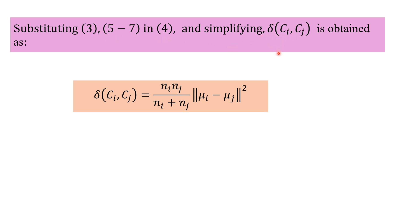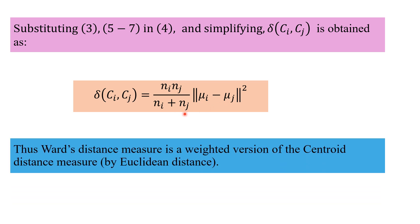The simplified delta(Ci, Cj) comes out so simply: it is the centroid distance with a weight. The WARDS distance measure comes out as a weighted version of the centroid distance, where n_i is the number of data points in Ci and n_j is the number of data points in Cj. This weighting is applied to the centroid distance between Ci and Cj.